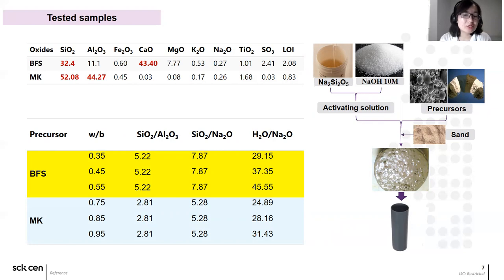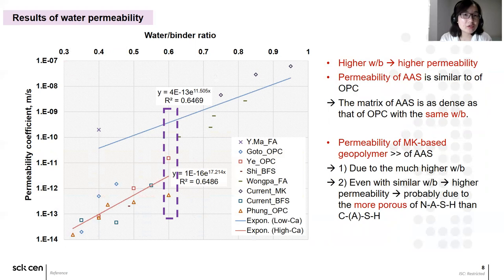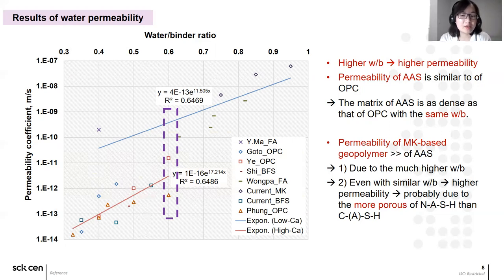The high water-binder ratio was chosen in the context of immobilization of radioactive liquid waste, which is not discussed further in this study. After around two days of water permeability testing for metakaolin and around one week for blast furnace slag, we obtained results for both MK and BFS. It can be seen that both MK and BFS alkali-activated materials have water permeability that depends much on the water-binder ratio — the higher the water-binder ratio, the higher the permeability coefficient. The permeability of BFS ranges from 10⁻¹² to approximately 10⁻¹⁴ meters per second.